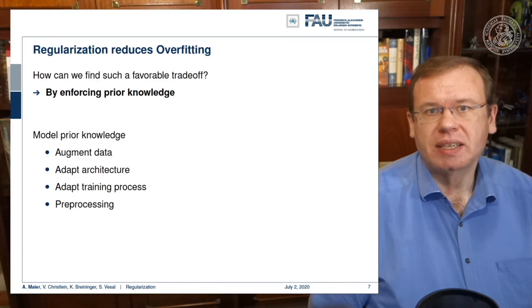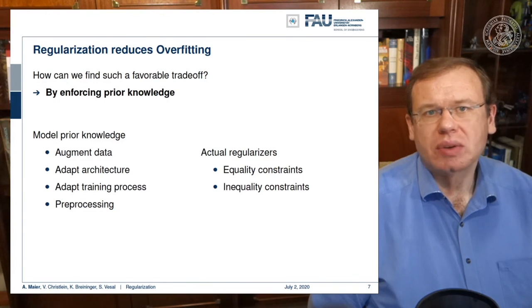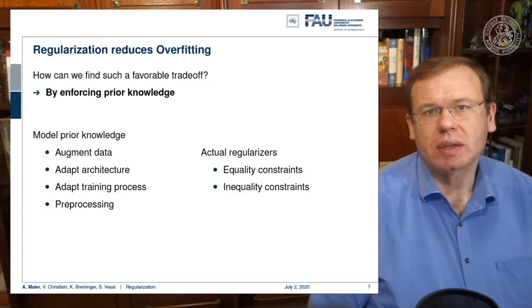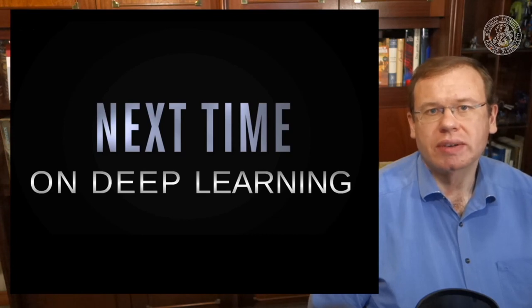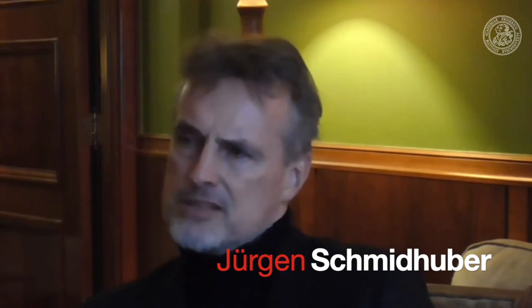Additional steps can incorporate prior knowledge. Actual regularizers can be augmented into the loss function and typically constrain solutions to equality or inequality constraints. This brings us to the end of this lecture. Next time we will look into classical regularization methods used in neural networks and machine learning. I hope you enjoyed this video and I look forward to seeing you in the next one.